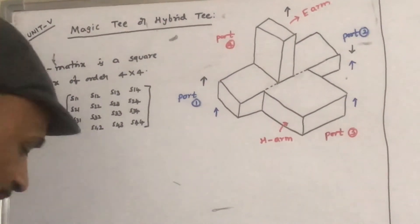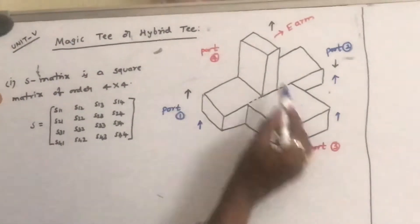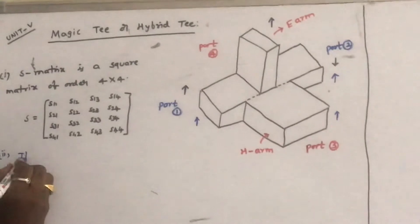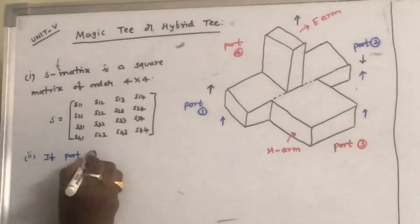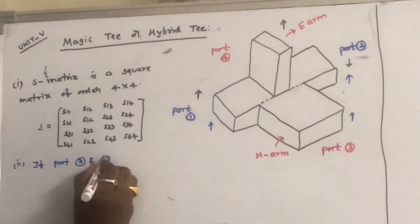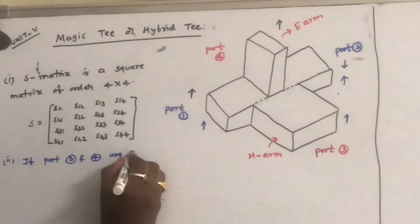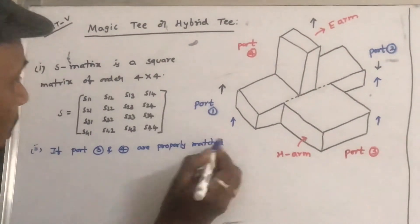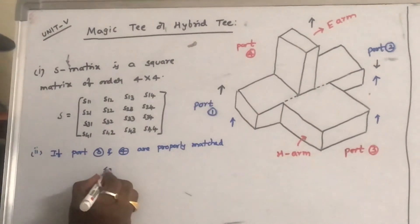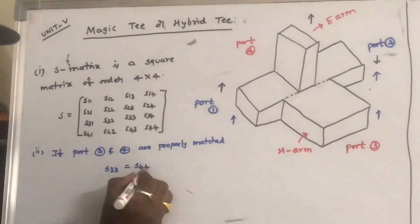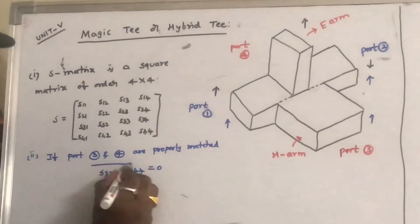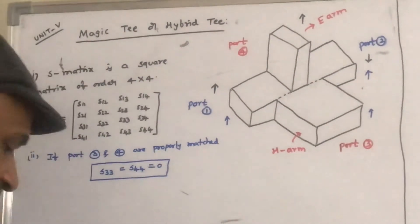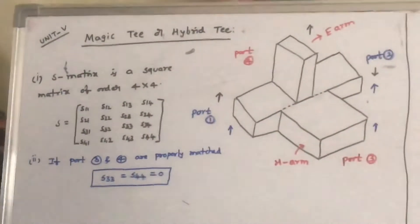First point: since it is a 4-port device, the S-matrix is a 4×4 matrix. Second point: if ports 2, 3, and 4 are properly matched, then S33 = S44 = 0.